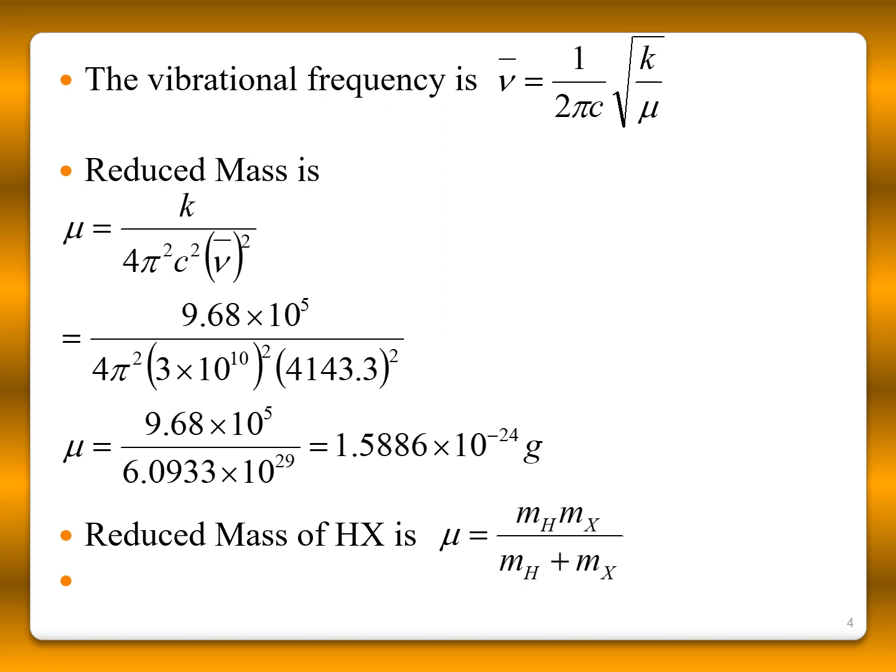If it is a diatomic molecule and it is also vibrating as a harmonic oscillator, the vibrational frequency is equal to 1 by 2 pi c square root of k by mu. The reduced mass here, you know the vibrational frequency, you know the value of k.